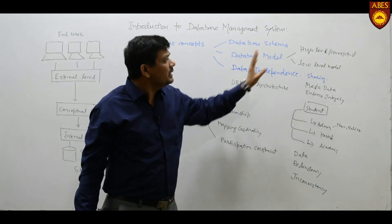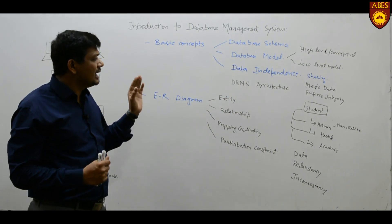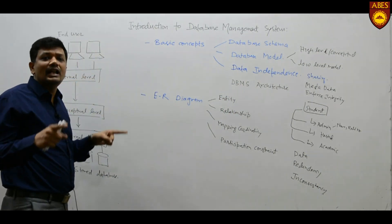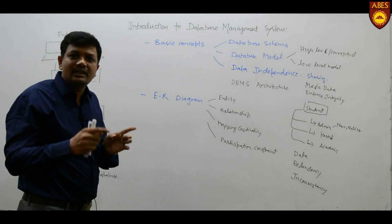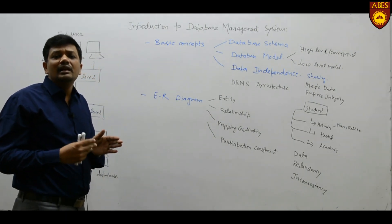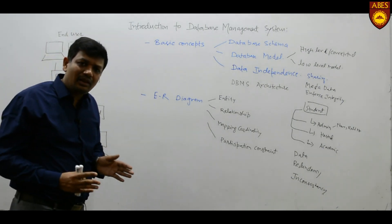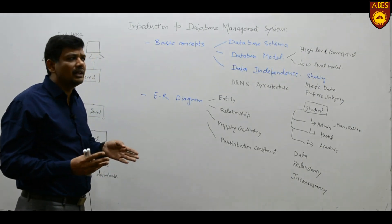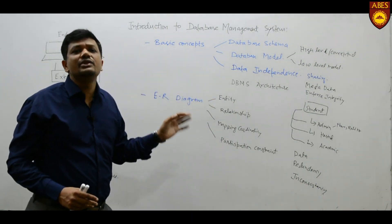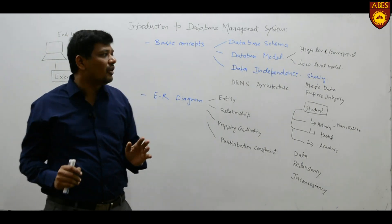In between these two categories, we have representation of data, which can be done in various ways. We have the relational model, and other models such as the hierarchical model and network model, though those have become obsolete. The most important model currently in use is the relational model, proposed by Dr. E.F. Codd.